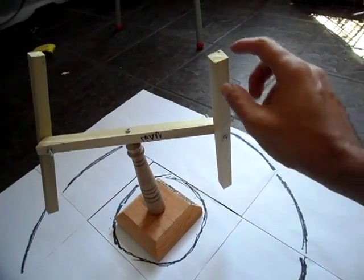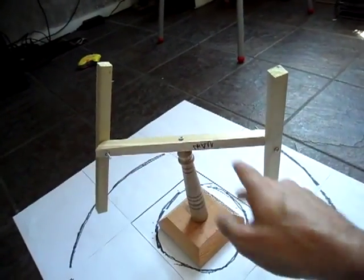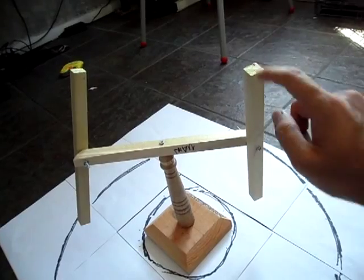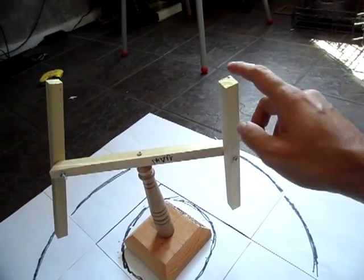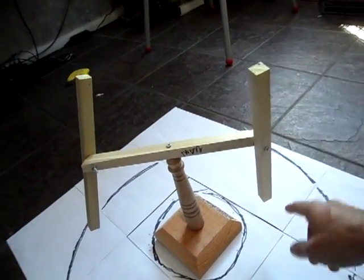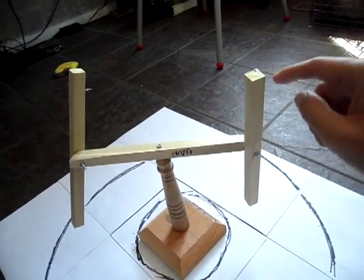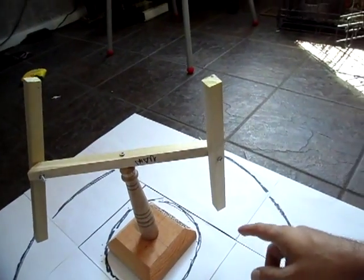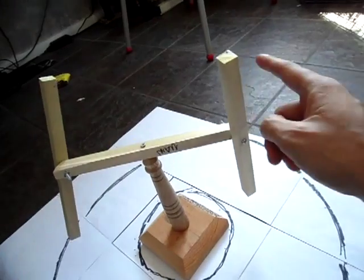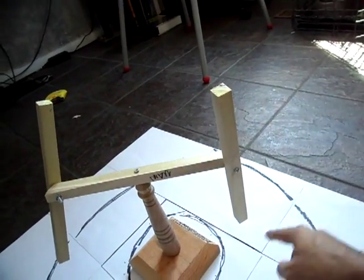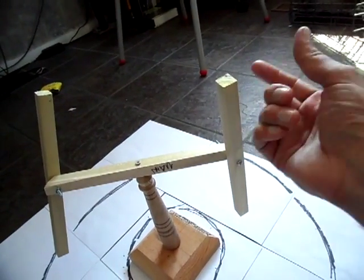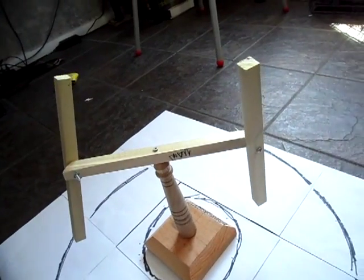Now ideally, with this model, you would have each side weighted with, I don't know, 10, 15 pounds or whatever, might not even need that much. Each side would be weighted. The ideal model, this would be a wheel with a weighted exterior parameter.